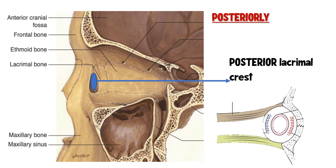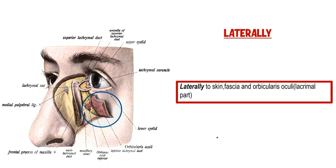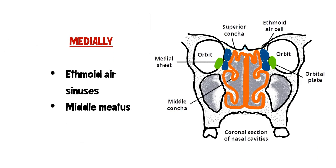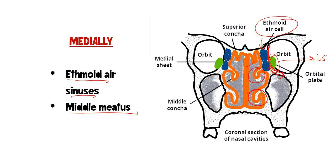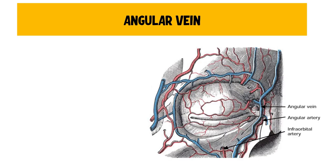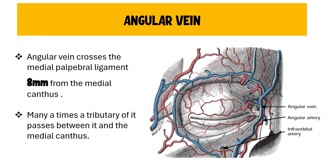The posterior relations of the lacrimal sac: the posterior lacrimal crest and structures attached to it form the posterior relations. Laterally, the sac is covered by skin, orbicularis muscle, and related fascia. Medially, it is related to the ethmoidal air sinuses — the superior concha, middle concha, and inferior concha. So the lacrimal sac medially is related to the ethmoidal air sinuses and the nasal meatus.